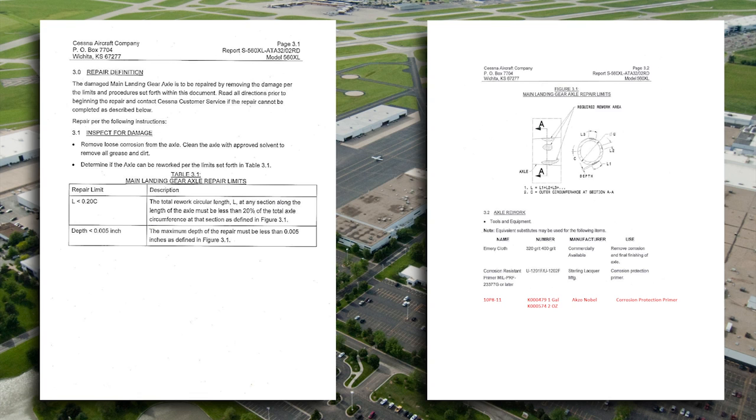Next, the depth total cannot exceed five thousandths of an inch. That's 0.005. It's not very much, and so that's going to be very important to us as we do our blending procedure because we do not want to exceed that. That description for the maximum blend limitation reads like this: the maximum depth of the repair must be less than five thousandths of an inch as defined in Figure 3.1.